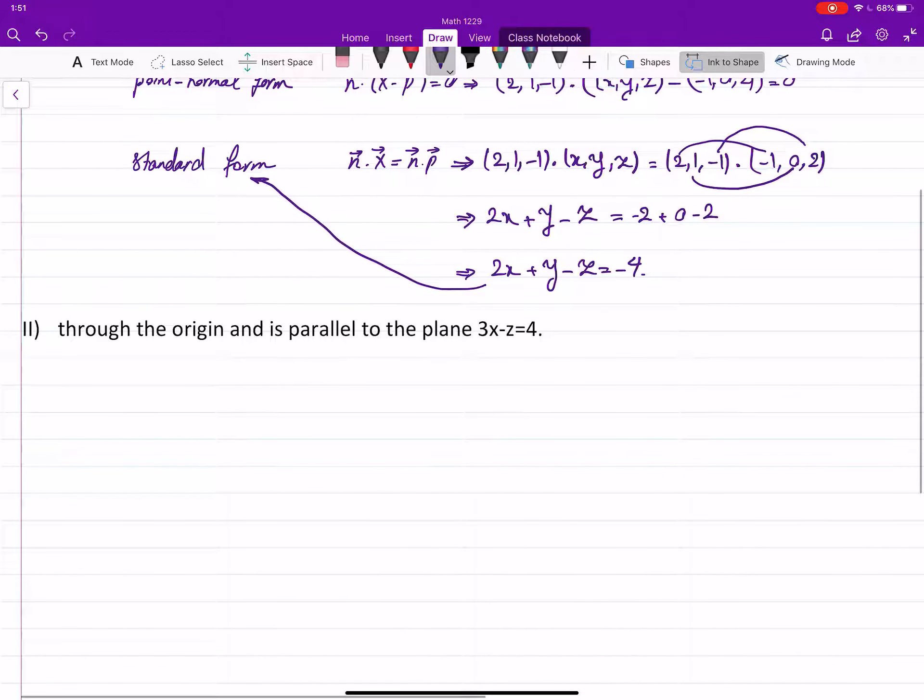How about this one? So the plane is through origin and is parallel to the plane. So we are looking for p, the point, which is the origin. Origin has coordinates (0, 0, 0).